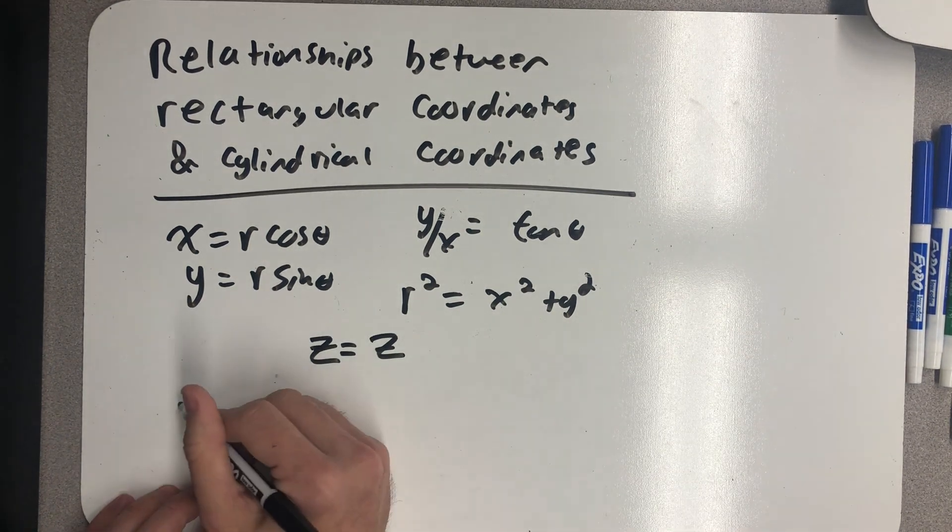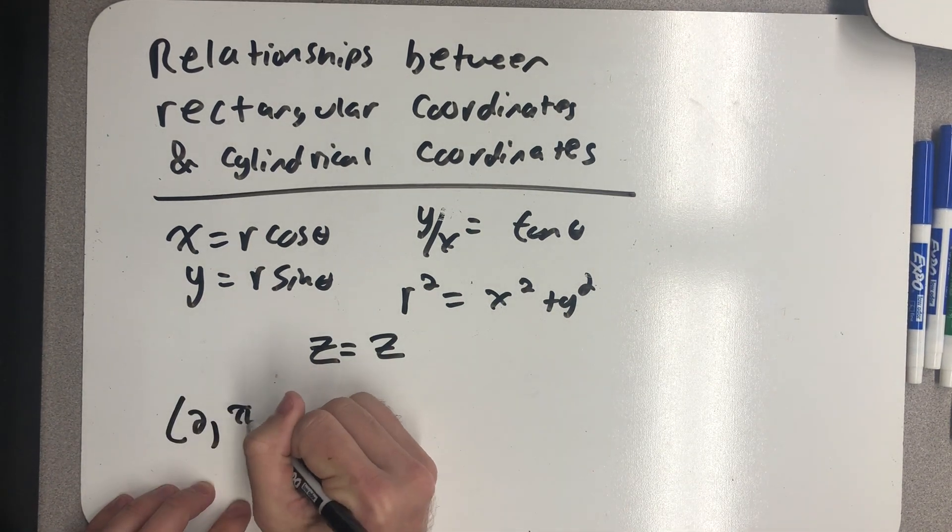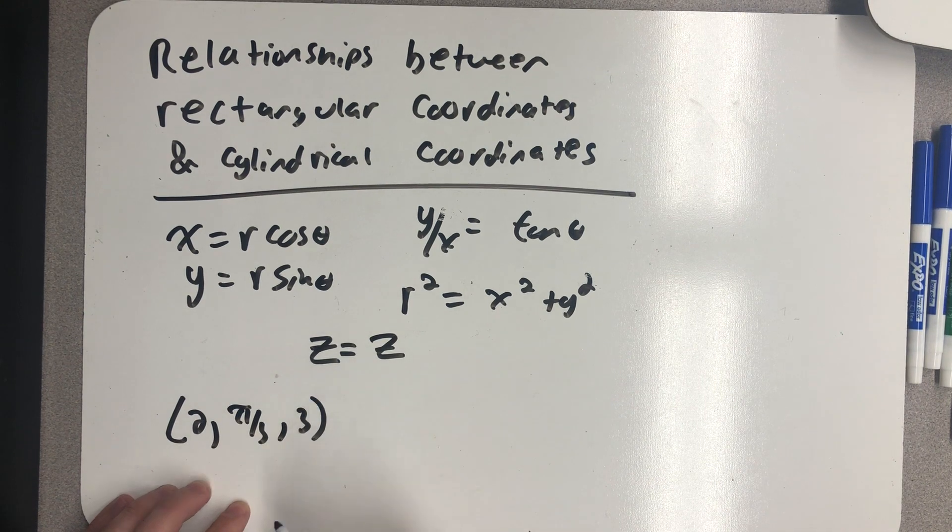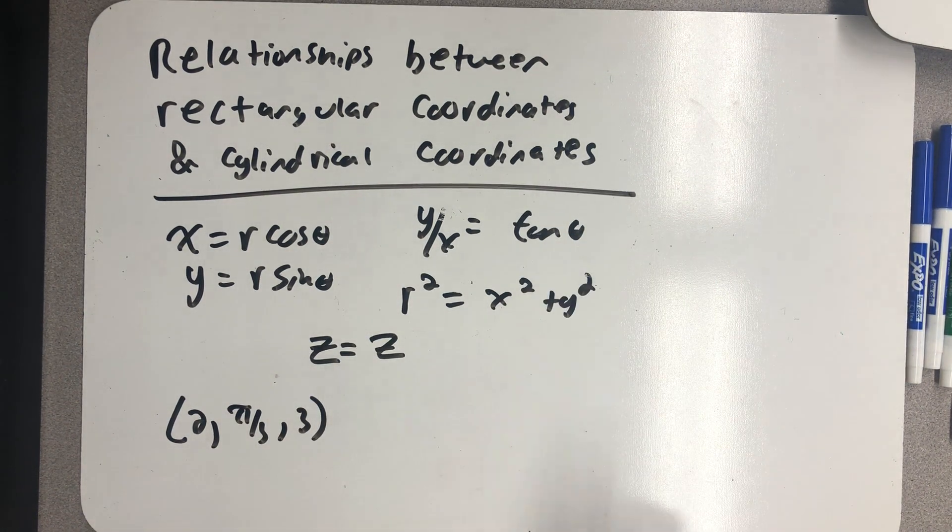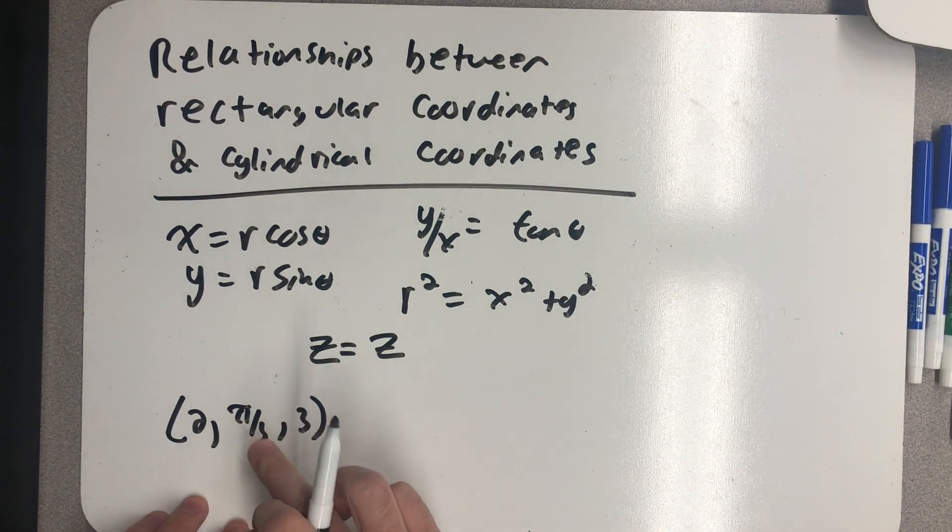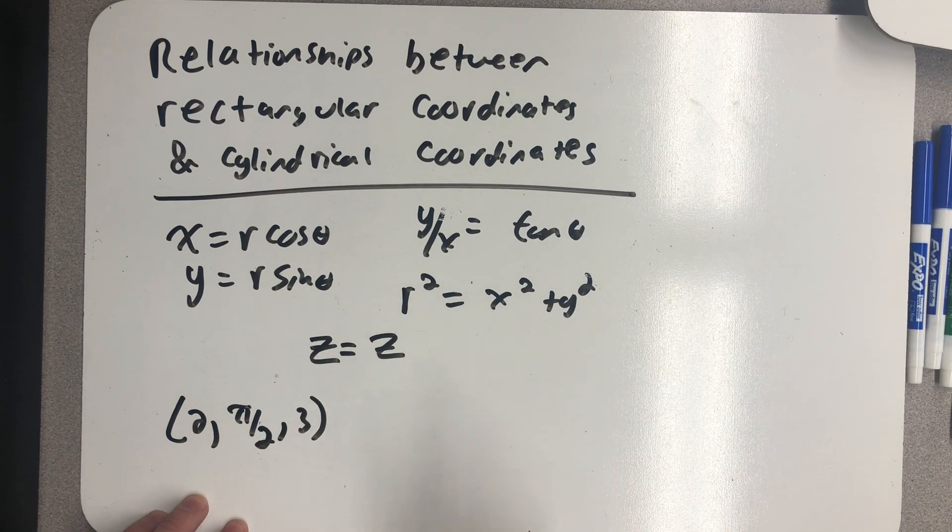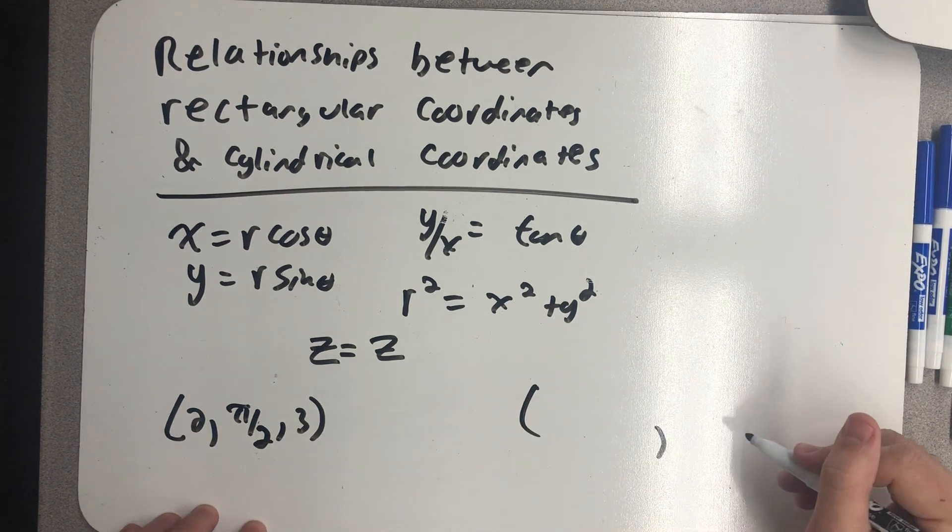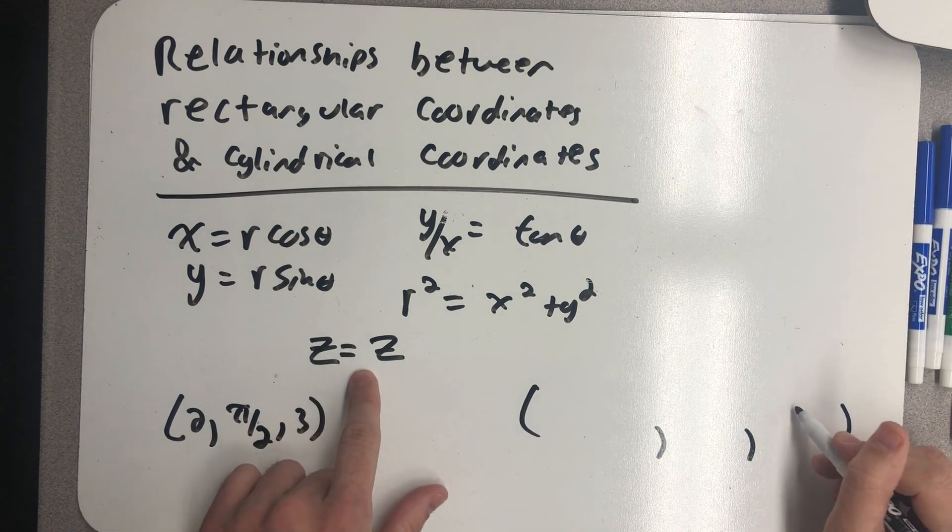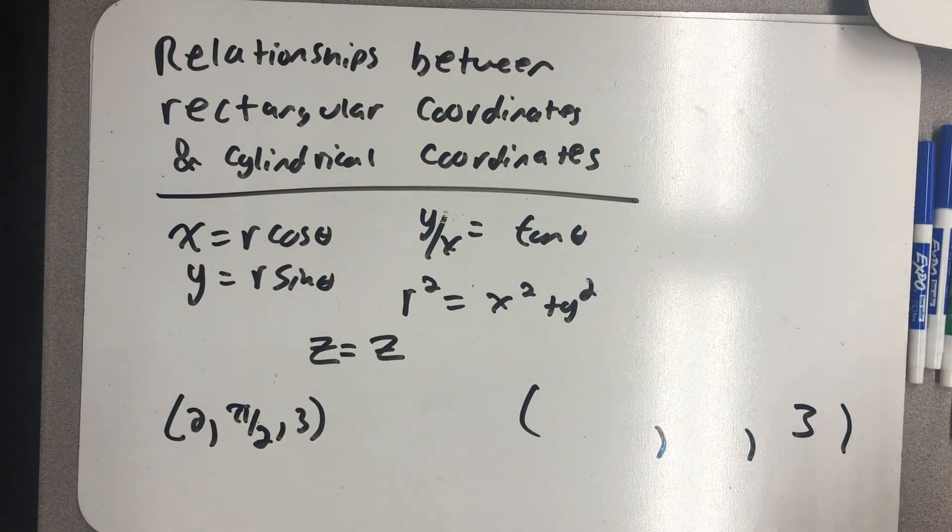Well, these are our relationships. So let's take that point we plotted, 2, pi halves, 3, and write it in rectangular coordinates. Excuse me, that was pi halves a minute ago. Well, I'll do the hard part. Z is equal to z. The z coordinate is 3.